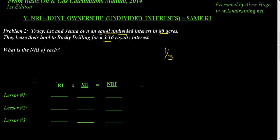In order to determine what is the net revenue interest, we're going to take the royalty interest times the mineral interest, and that's going to equal our net revenue interest. So the royalty interest in this case is three-sixteenths, which is 0.1875, and it's the same for Tracy, Liz, and Jenna.